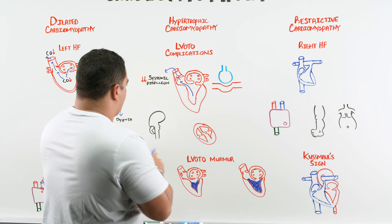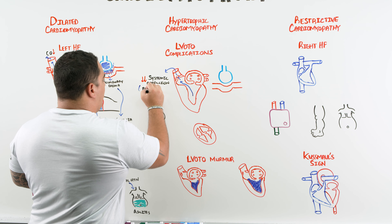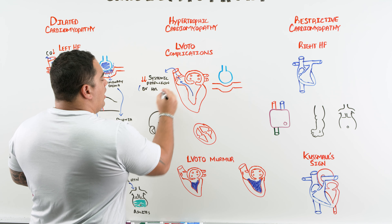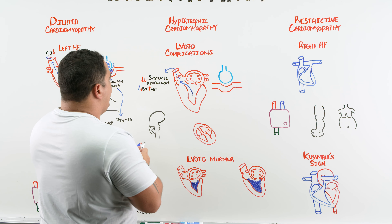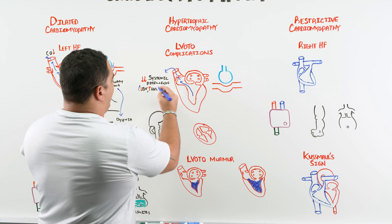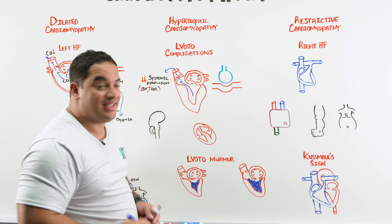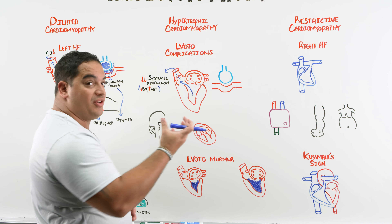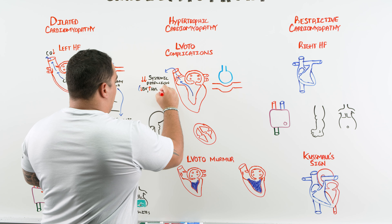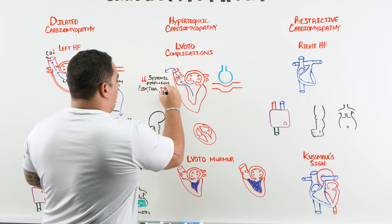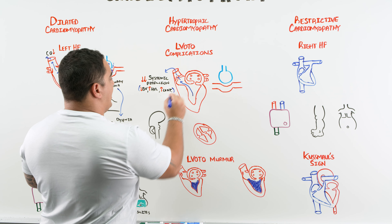Low blood volume and very high heart rate worsen the problem because less blood enters the heart and the heart doesn't have time to fill properly. Increasing contractility also worsens it. All of these worsen systemic perfusion. When perfusion drops enough — particularly to the brain — it causes a transient loss of consciousness called syncope.